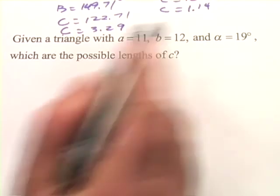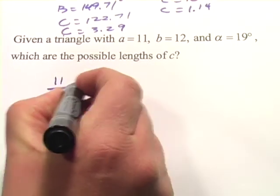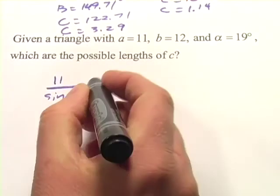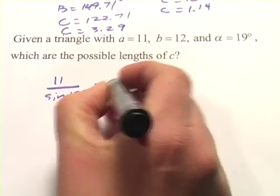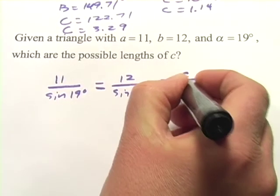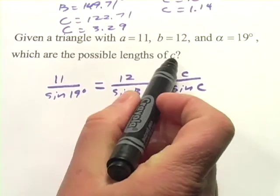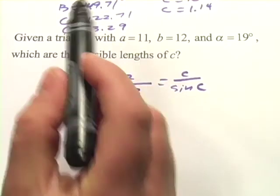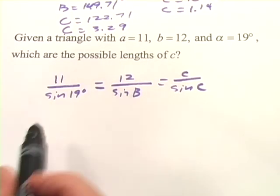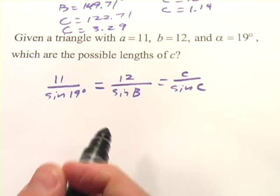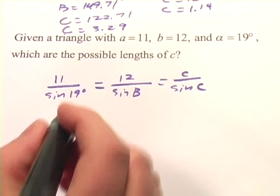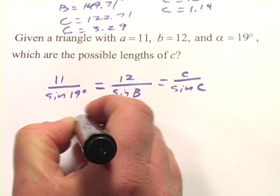And we're given, again, two sides and an angle. So we'll set this up. We've got 11 over the sine of 19 degrees—that's side a over angle A. And we've got 12 over the sine of B, and C over the sine of C. We have to go through the same process here. Even though they're only asking for the lengths of C, we've got to go ahead and find the two possible angles of B, subtract from 180 to find the two possible angles of C, and then solve for the sides. So we'll start with 11 divided by the sine of 19, and that is 33.79.